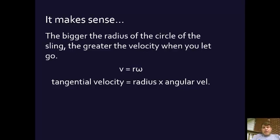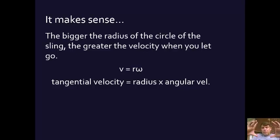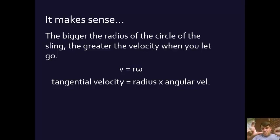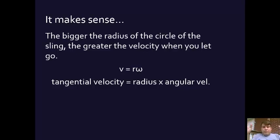Multiplying by the radius gets it out of radians per second and into meters per second or whatever unit you're using, because the radius is a measurement like centimeters, millimeters, meters, or feet.